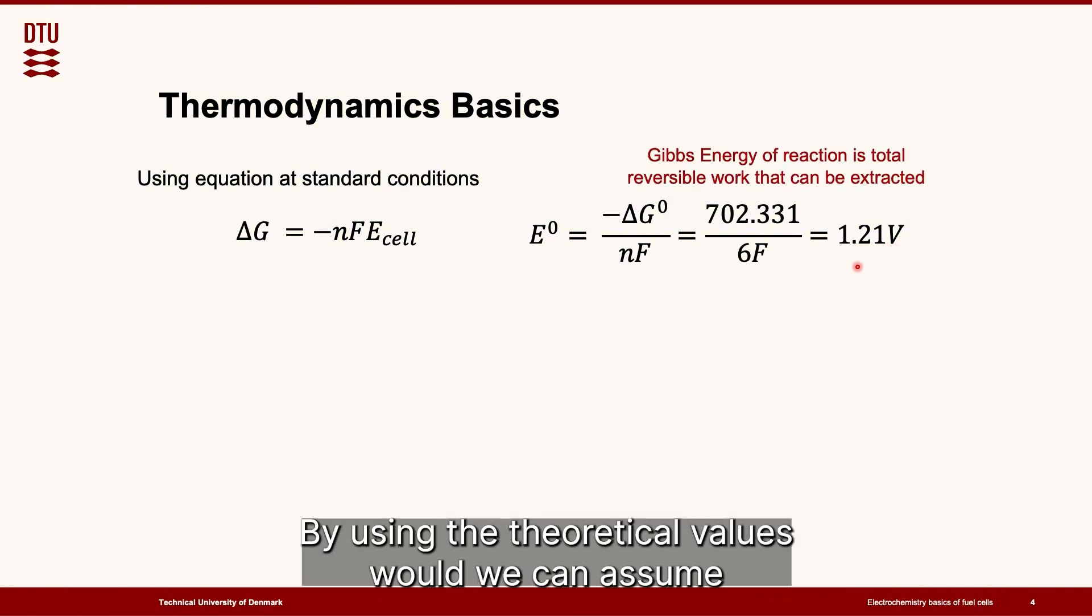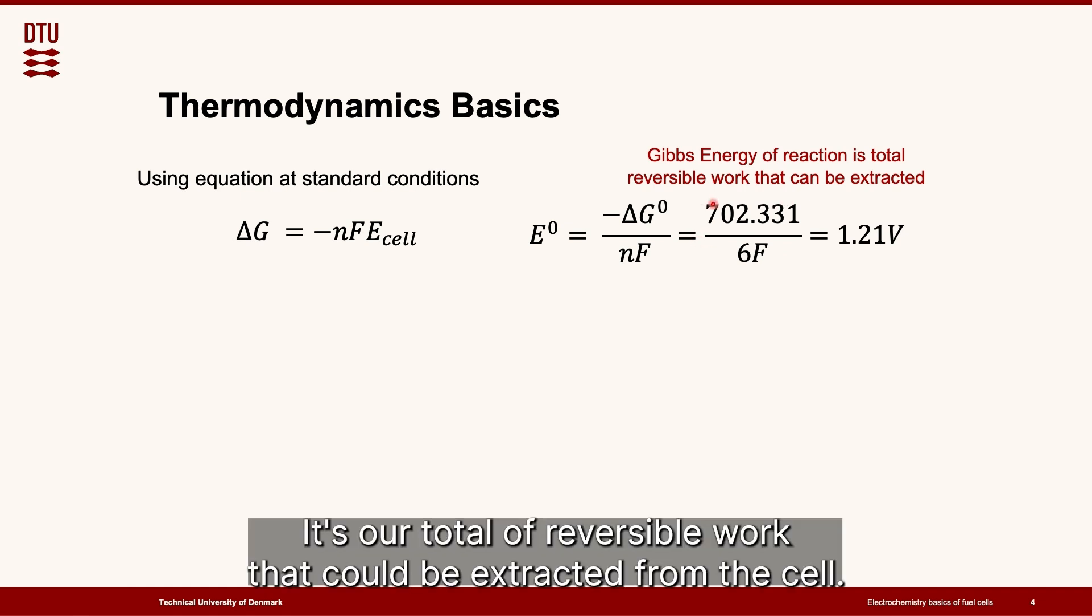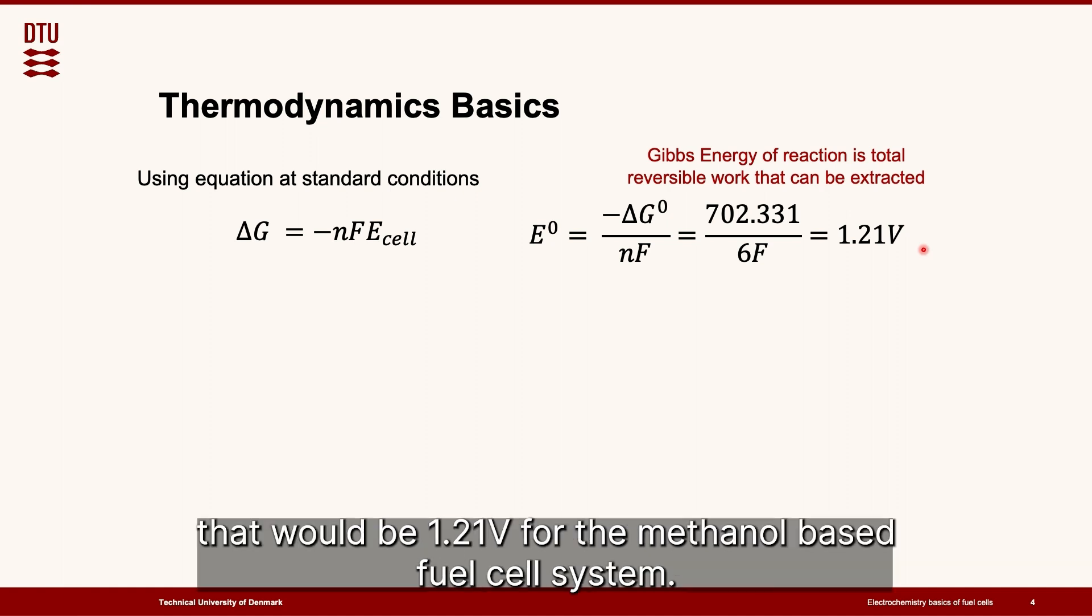By using the theoretical values, what we can assume is that Gibbs energy of the reaction, our delta G, is our total reversible work that could be extracted from the cell. So an ideal system at a standard condition would be 1.21 volts for the methanol-based fuel cell system.